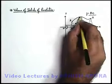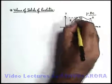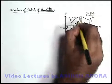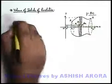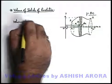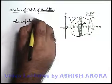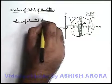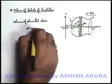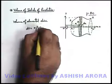The radius of this disc will be given by the value of y coordinate at the position x. So if we talk about the volume of elemental disc, this can be simply given by π y² dx.